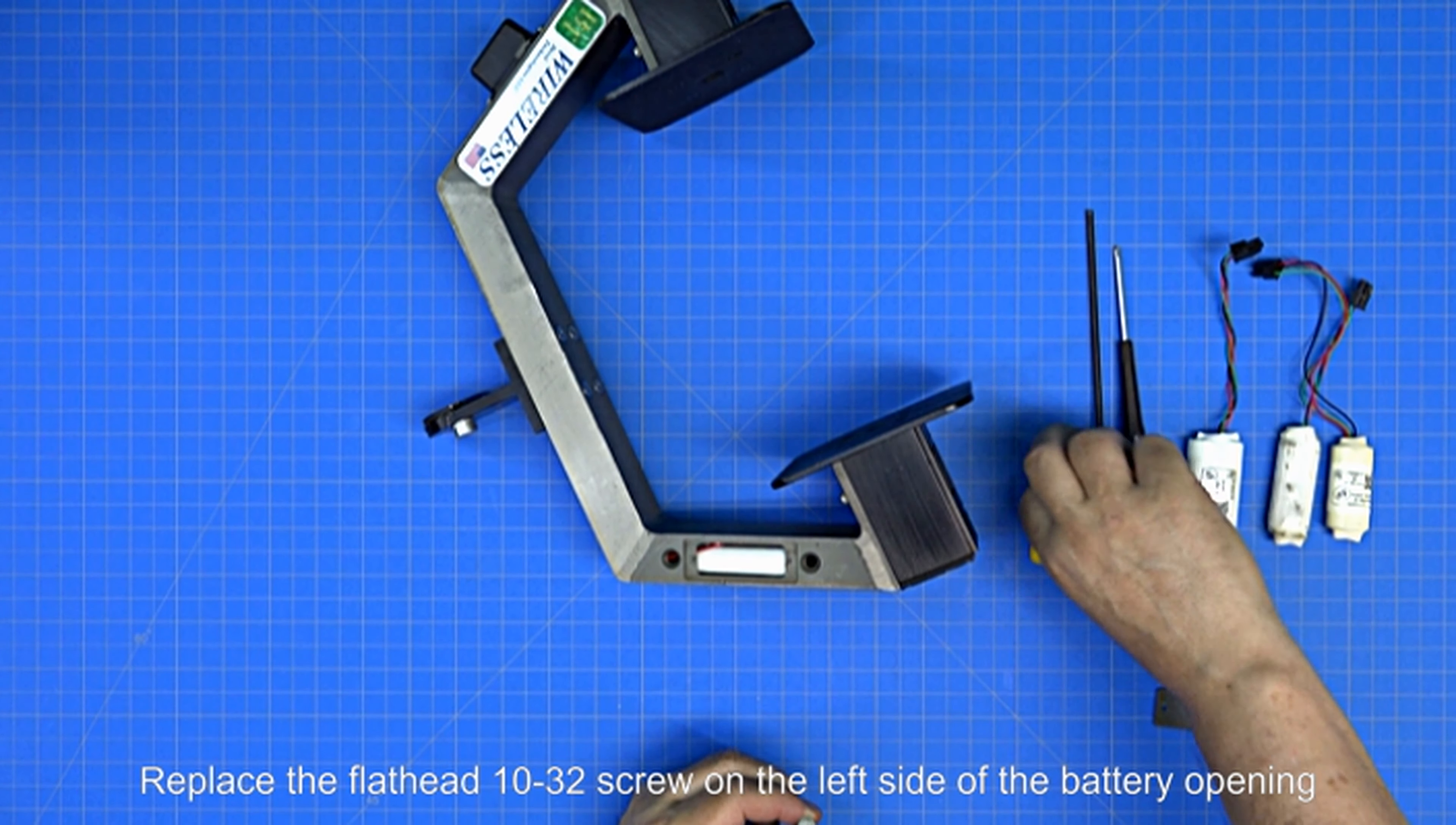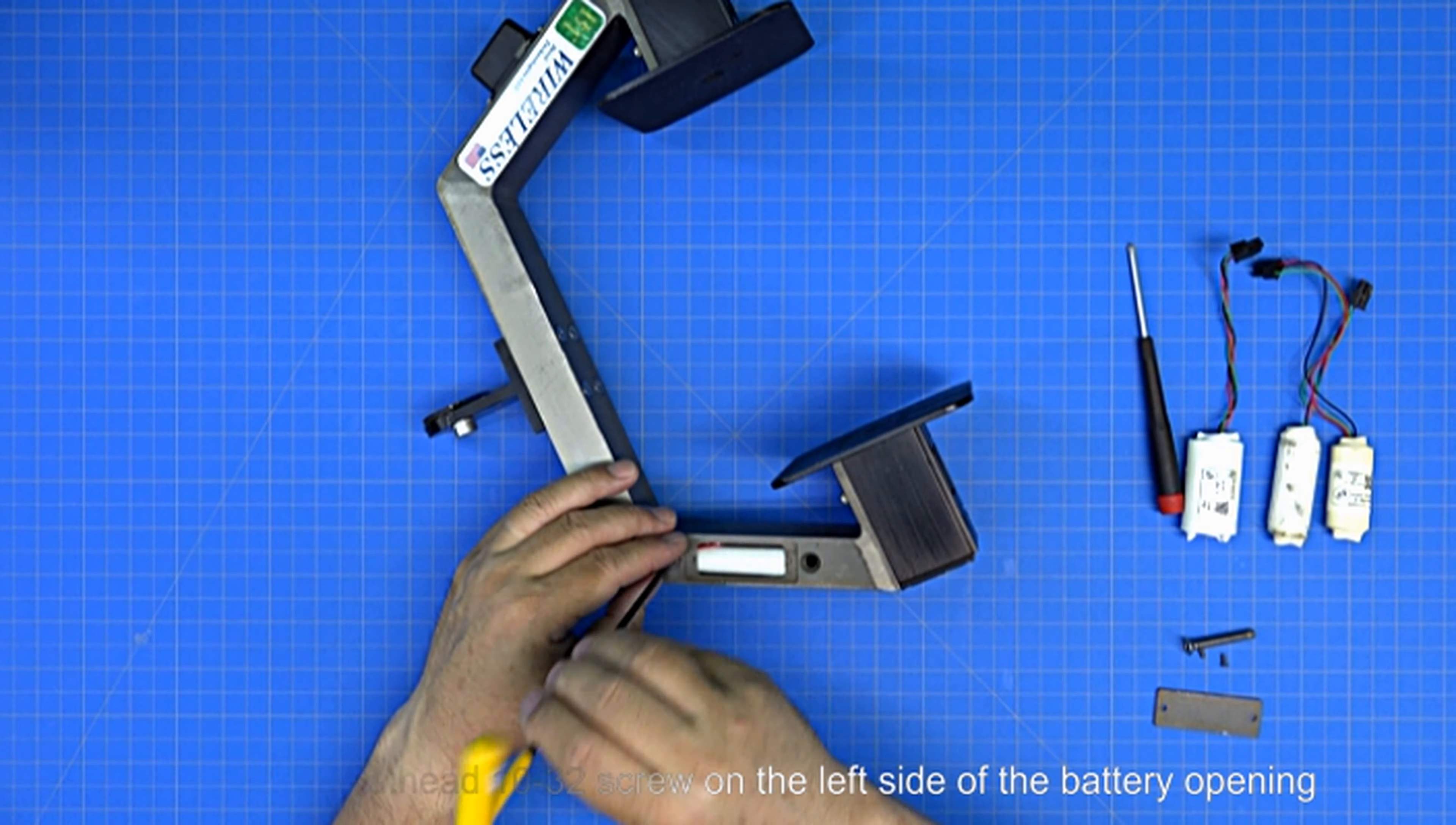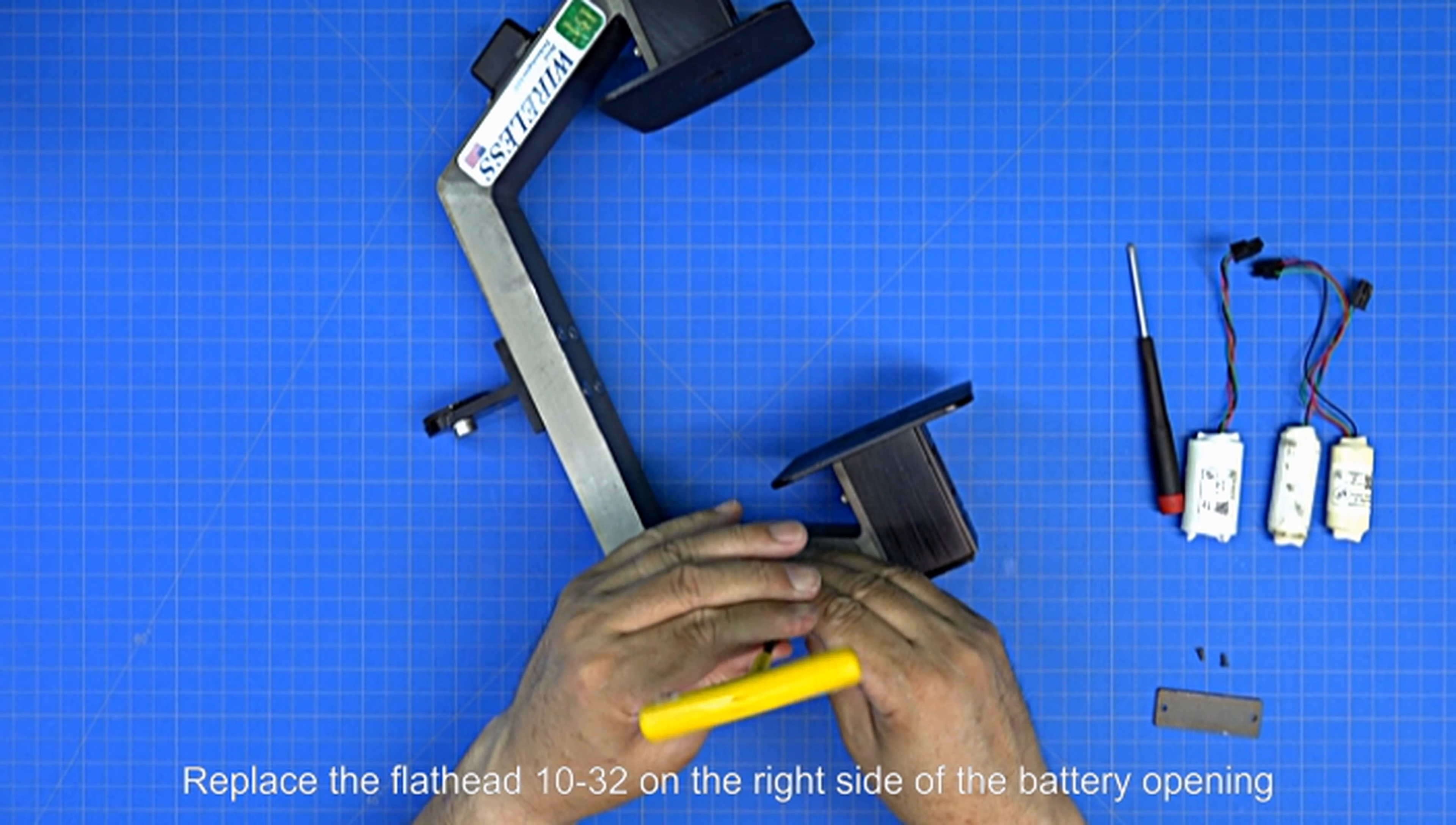Replace the flat head 10-32 screw on the left side of the battery opening. Replace the flat head 10-32 on the right side of the battery opening.